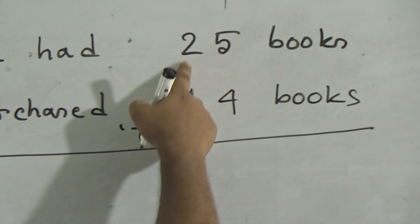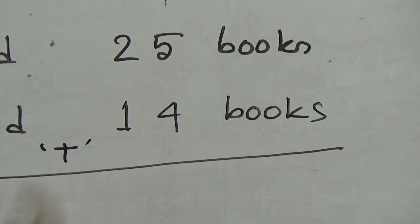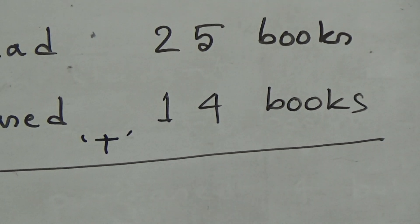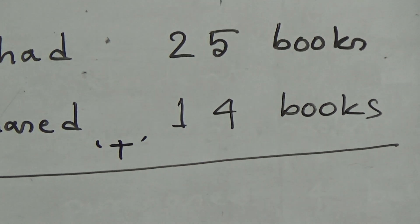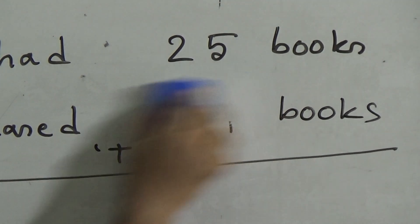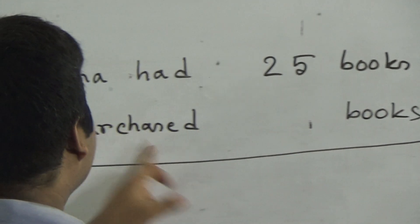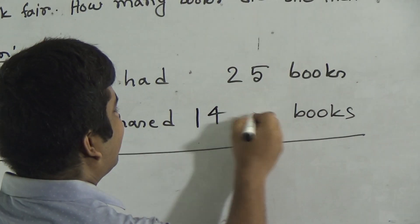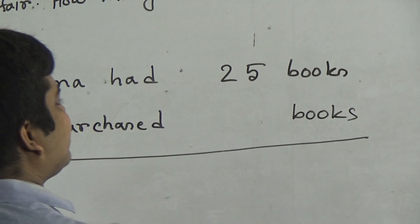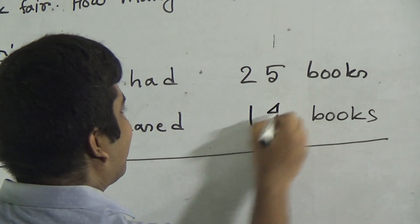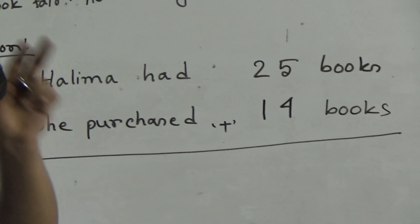My dear students, you must write the digit under the digit. Five is in ones place, two is in tens place. Four is in ones place, and one is in tens place. So you must write four under five and one under two. Some students write it incorrectly — that is absolutely wrong. You must write it in the proper way with the plus sign given.